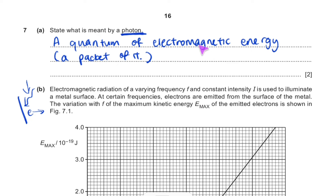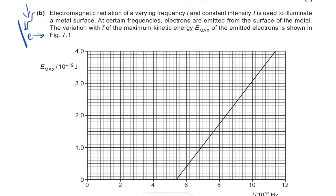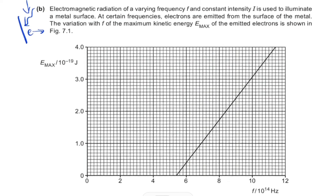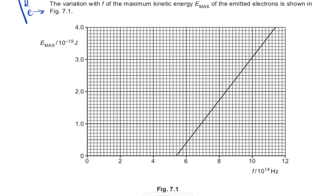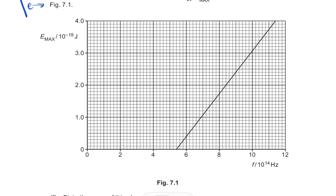Now we go to a very important graph in terms of the photoelectric effect. The graph shows electromagnetic radiation of varying frequency f and constant intensity I used to illuminate a metal surface. At certain frequencies, electrons are emitted from the surface of the metal, and the variation with f of the kinetic energy E_max of the emitted electrons is shown.